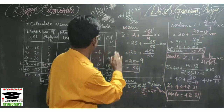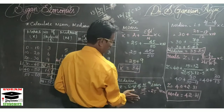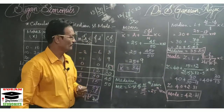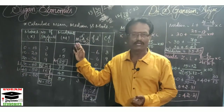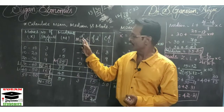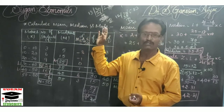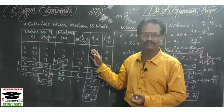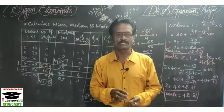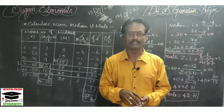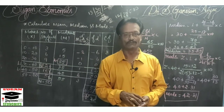In this manner, with the help of a single table, we can calculate mean, median and mode. This type of question will be asked in Part C. Simply prepare one table — no need to waste time preparing separate tables for mean, median and mode. For those who are not subscribed to Sukhan Economics, kindly subscribe and click the bell button so you get notified whenever we upload a video. Thank you, friends.